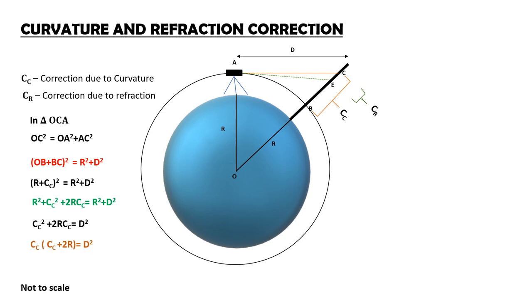If you take CC commonly outside, then CC into CC plus 2R is equal to D square. So, CC is equal to D square by CC plus 2R.